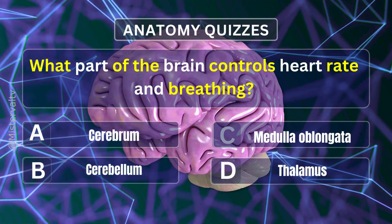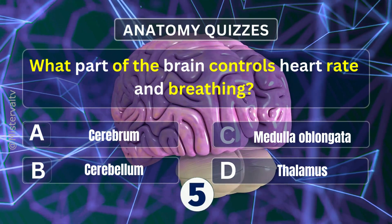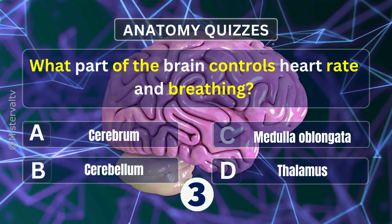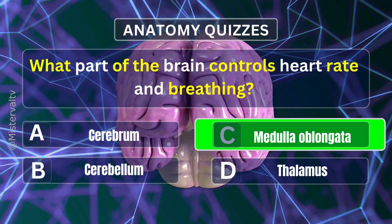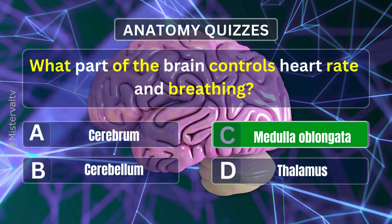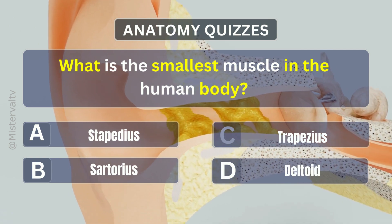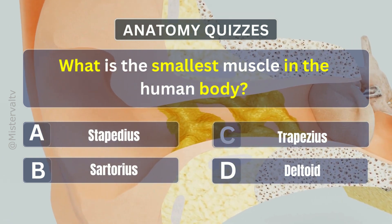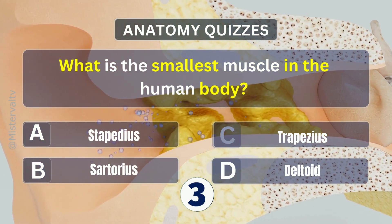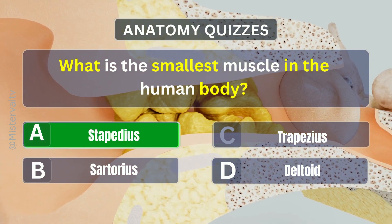What part of the brain controls heart rate and breathing? Answer. C. Medulla oblongata. What is the smallest muscle in the human body? Answer. A. Stapedius.